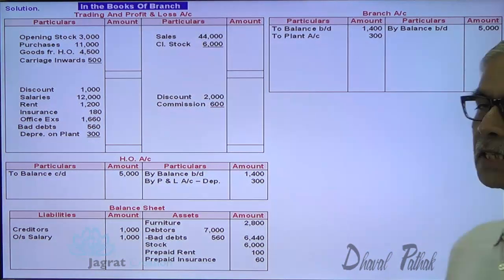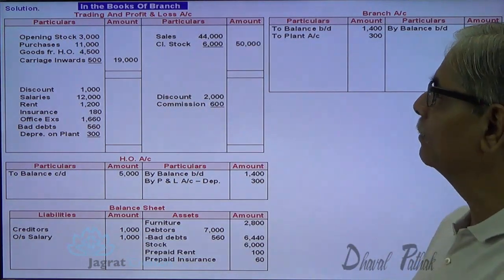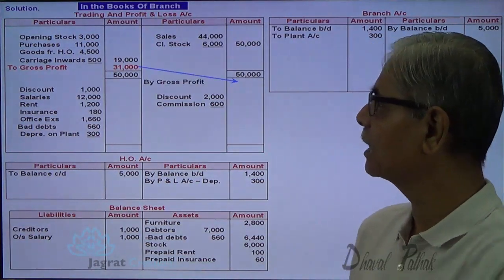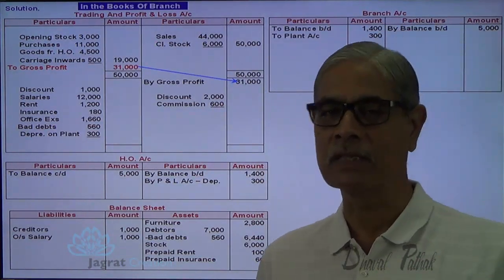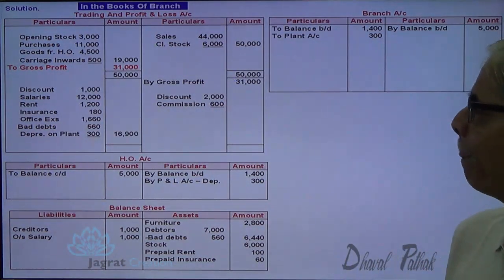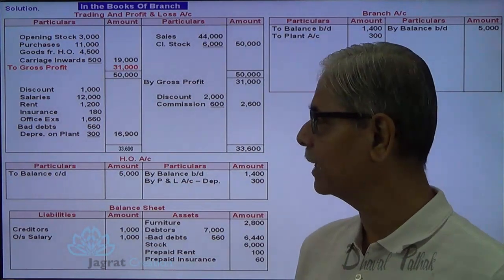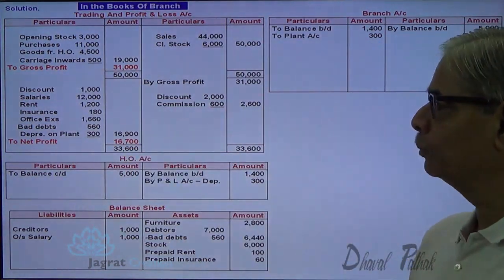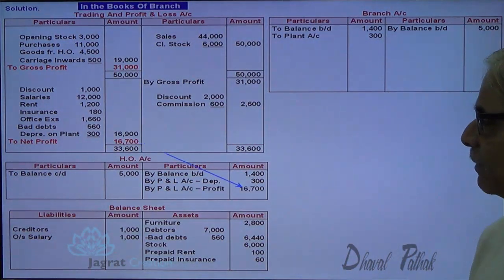Now calculating gross profit: total of trading account expenses = 19,000; total of credit side = 50,000. Gross profit = 50,000 − 19,000 = 31,000, transferred to profit and loss account. Adding income of 2,600 gives 33,600. After deducting expenses of 16,900, net profit = 16,700, which is transferred to the capital account — known as the HO account in branch books.